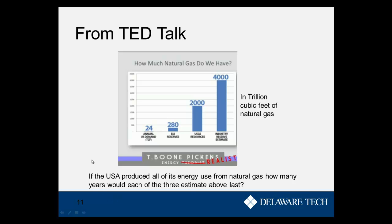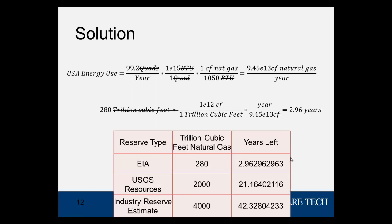Here's a sample problem: if the U.S. produced all of its energy use from natural gas, how many years would each of the three estimates last? We look at U.S. energy use, which is about 99.2 quads per year, and convert that to how much natural gas we'd use per year — this is if we supplied all United States energy, including all transportation fuel and all electricity generation, with just natural gas. Using the EIA estimate of 280 trillion cubic feet, we divide and convert to cubic feet, and it would last 2.96 years. If we do the same thing with the U.S. GS estimates and the industry estimates, we get 21 years and 42 years.